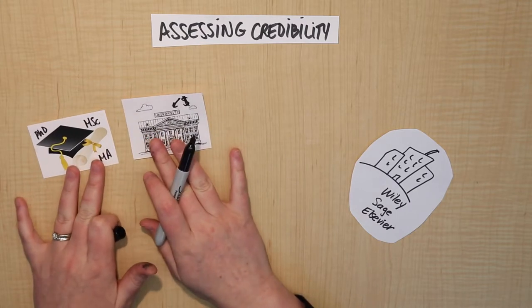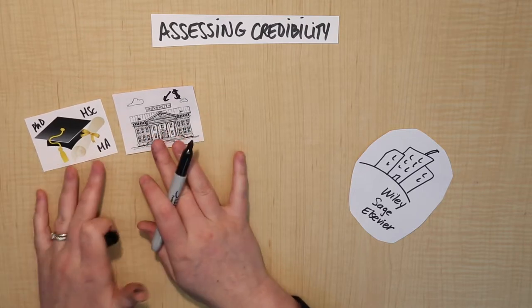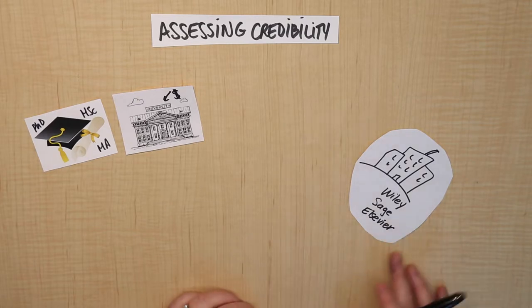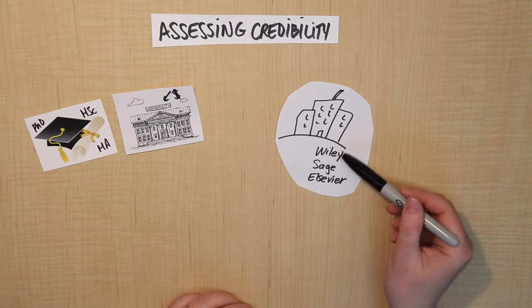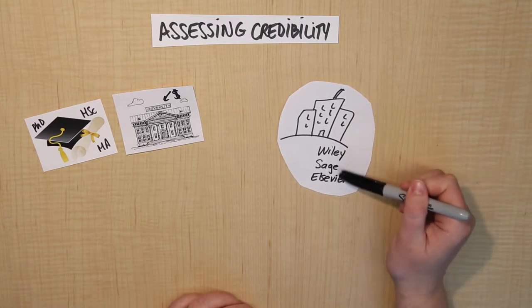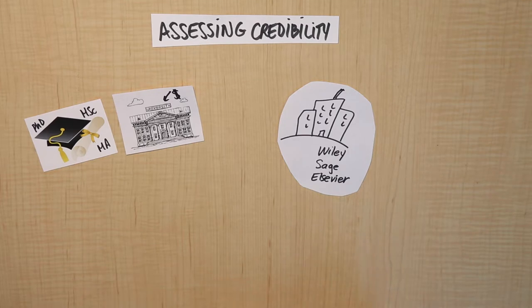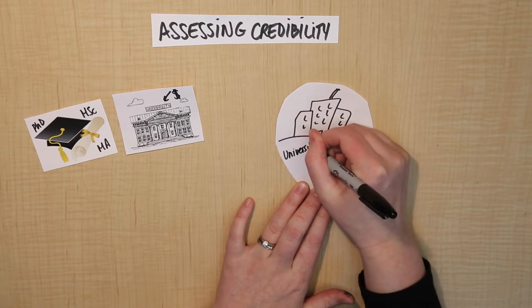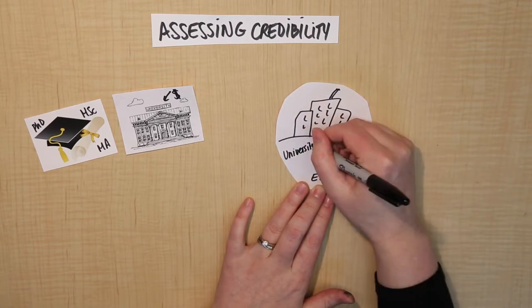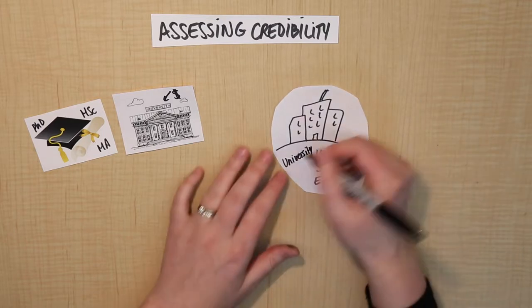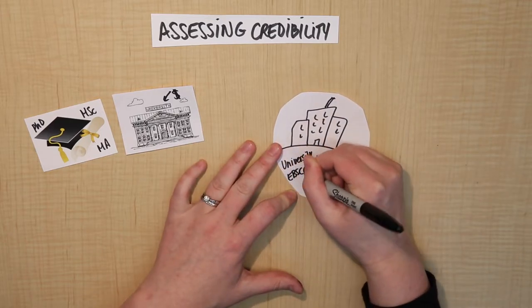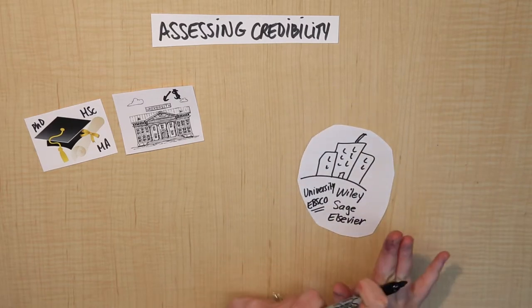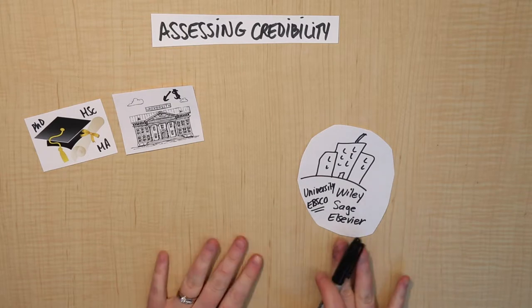Talking about these things is really important, because these are the criteria we traditionally use to determine the credibility of a paper and the author that wrote it. The other thing is that if you see a paper published by one of the big traditional academic publishers, or sometimes a university publisher, you can know that they've already done some vetting — they've definitely gone through the peer review process — and the article can be considered generally credible.